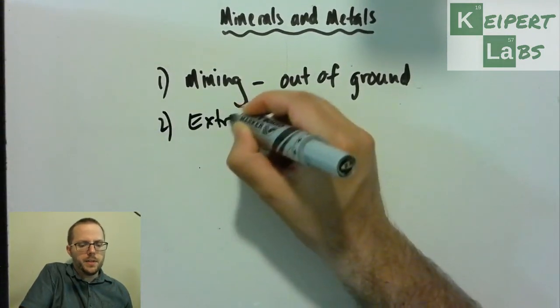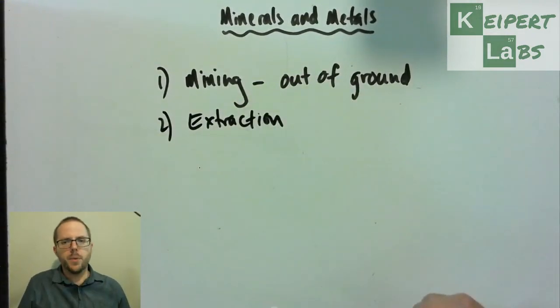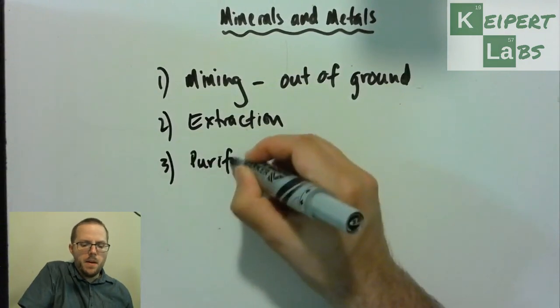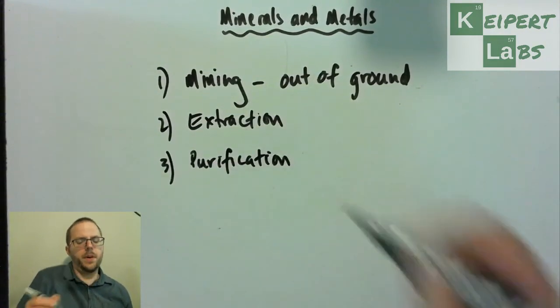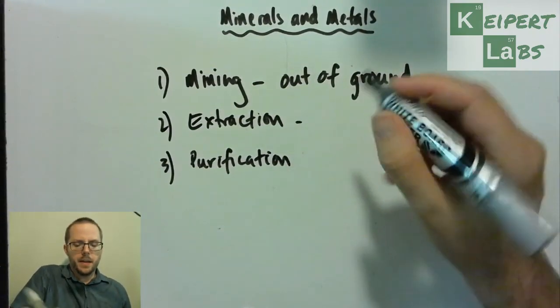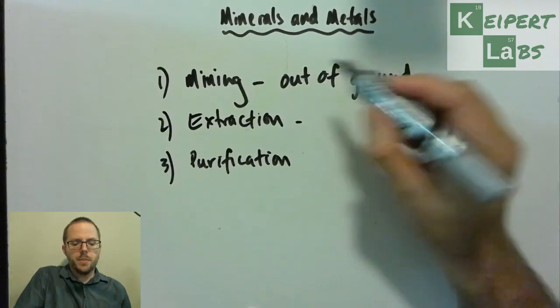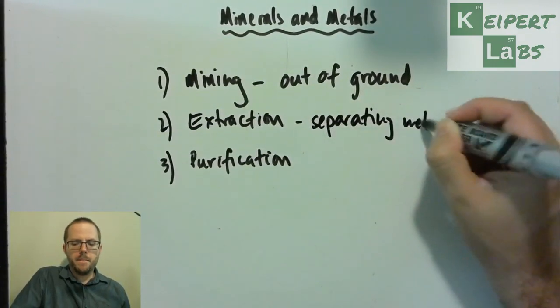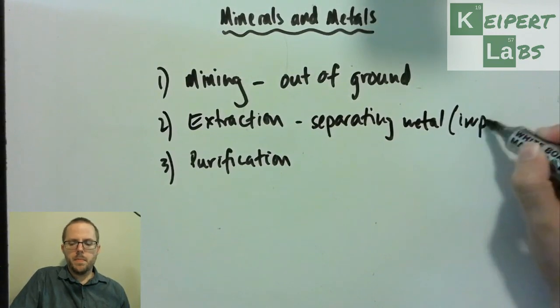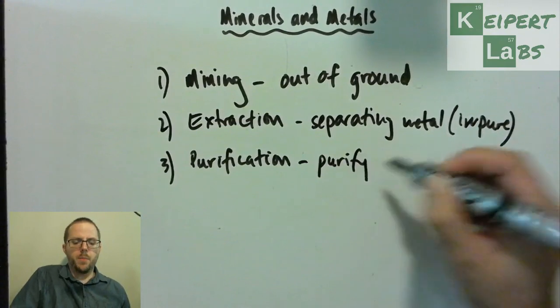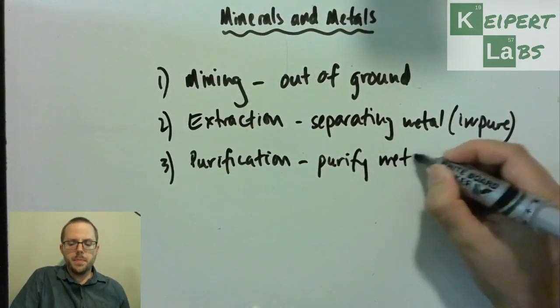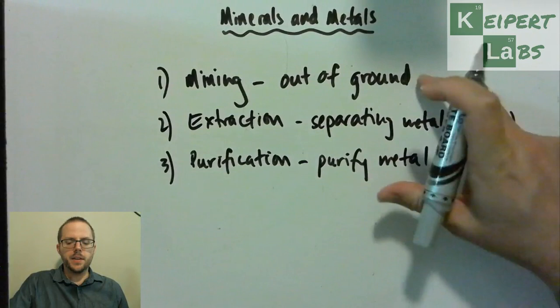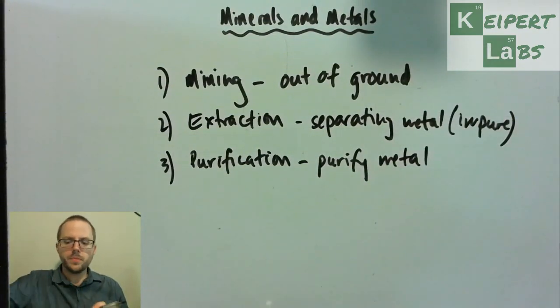And then we've got to go through this process of extraction. Now we'll go through that in a little bit more detail just in a moment. And then we go through this final kind of process of purification. So extraction, we're separating the metal, but it's impure. And then purification as the name would suggest is get a sample of pure metal at the end or as pure as we can manage in real world situations. So these are the sort of processes that we would want to do.